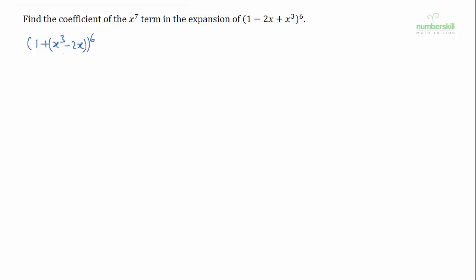The next thing to understand is that this is going to be quite tedious — we're going to have a binomial within a binomial. If you expand this, you're going to have 1, then 6C1 multiplied by the second term, then 6C2 times (x³ − 2x)², then 6C3 times (x³ − 2x)³, and so on and so forth.